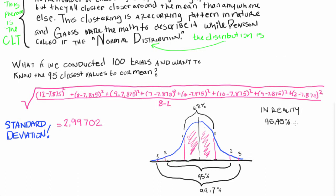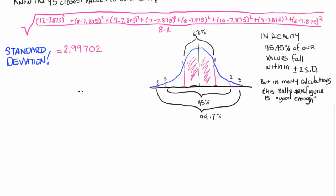Now, in reality, 95.45% of values are going to fall within the two standard deviations, but in many calculations, this ballpark figure is good enough. Now, what if your boss actually wants exactly 95%? We'll give him 1.96 then.